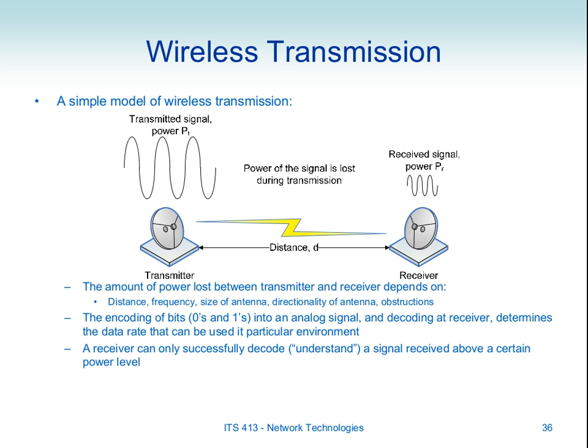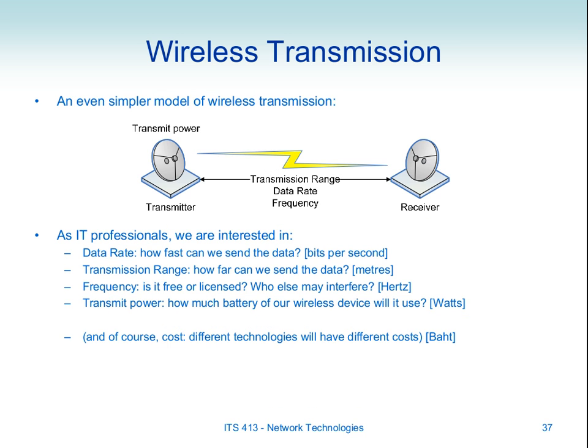Typically with devices, with receivers in particular, the received signal must be strong enough such that the device can decode the data that was transmitted in that signal. It depends upon how that device was built, the characteristics of the device. In this course we primarily care about the distance at which we can transmit — how far can we transmit at some transmit power such that the receiver can receive and decode the data?